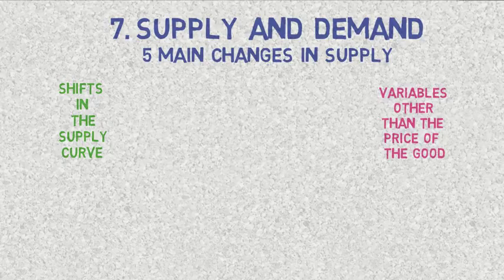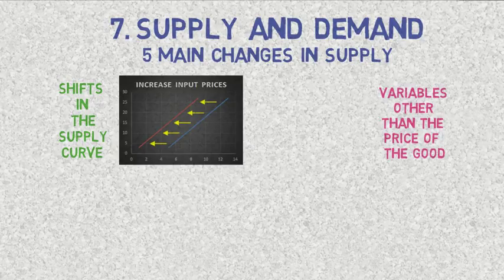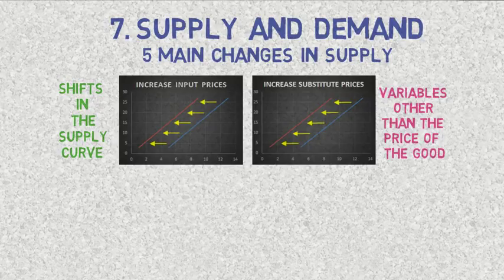There are many determinants of supply, but the most important ones are as follows. The first determinant is the prices of inputs — since producers are price takers, if input prices increase, they cannot simply sell their production for a higher value, so they end up producing less and the supply curve shifts to the left. The same leftward shift is expected when the prices of substitutes increase. For instance, if farmers produce either corn or wheat and the price of wheat increases, farmers will start producing more wheat and less corn, so the increase in the substitute's price leads to a decrease in the supply of corn.